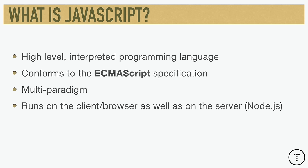Interpreted means the program is executed directly without having to run through a compiler. Java, which is not related to JavaScript — beginners sometimes get the two confused — is a compiled language. JavaScript, however, is a scripting language and it's interpreted. JavaScript also conforms to the ECMAScript specification. You could say JavaScript is ECMAScript, though there are other implementations like JScript and ActionScript, but JavaScript is definitely the most popular.